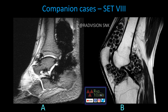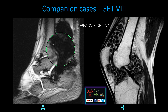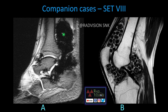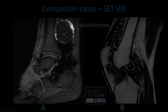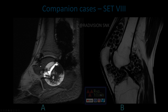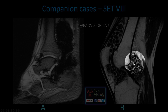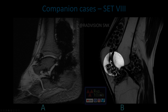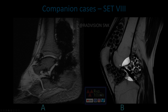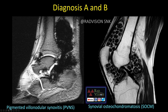Next case shows multiple lobulated synovial thickening adjacent to the ankle joint with significant blooming on GRE sequences — this is pigmented villonodular synovitis. The second case shows multiple round to oval hypointense nodular lesions with blooming on GRE at the knee joint — this is synovial osteochondromatosis.